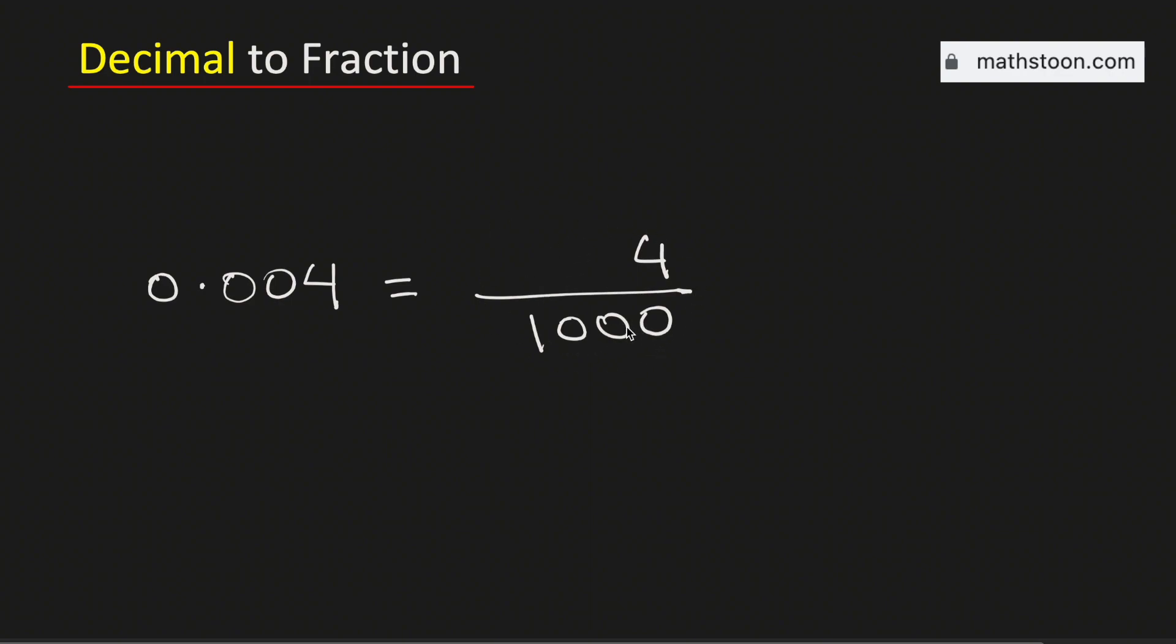See that both the numbers are divisible by 2. So dividing them by 2 we will get 2 in the numerator and 500 in the denominator.